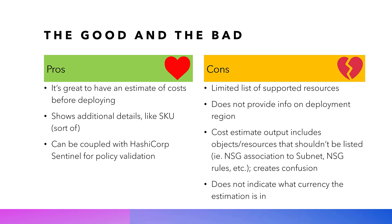I also didn't like that it didn't provide additional information on the deployment region. It recognized that the Azure Firewall was a standard tier, but in the portal it says it's going to the default region — which isn't accurate, because I was targeting a specific Azure region. I would have liked to see that metadata surfaced through the cost estimation engine, since it's available as an output from the Terraform plan itself.